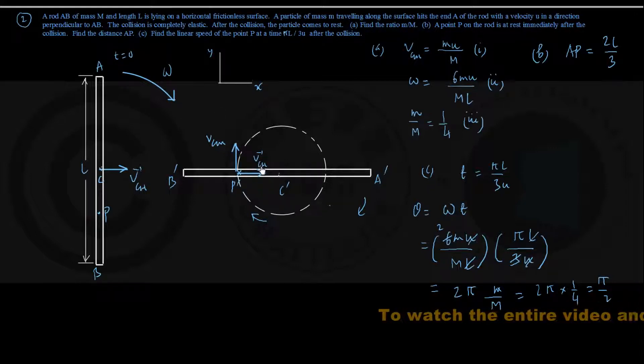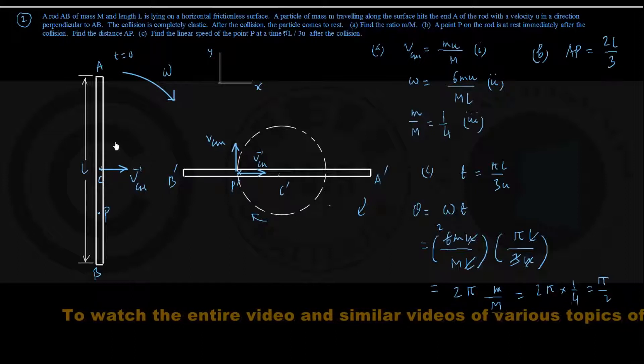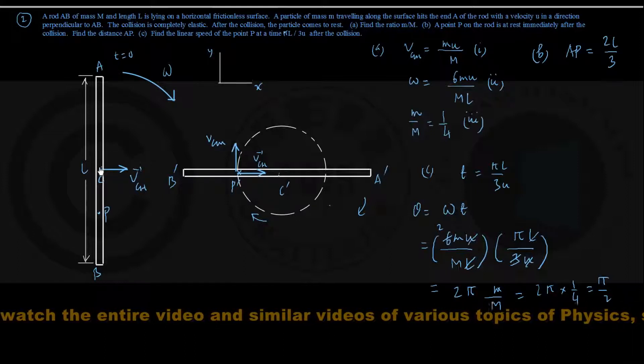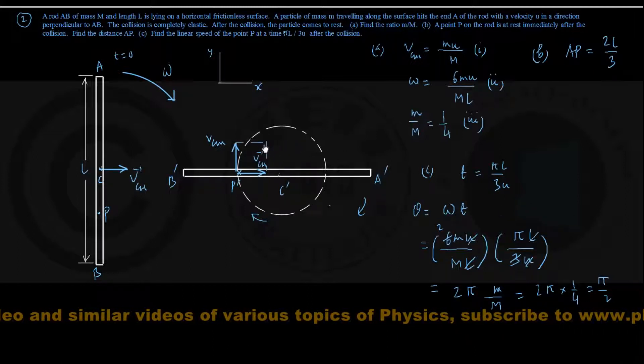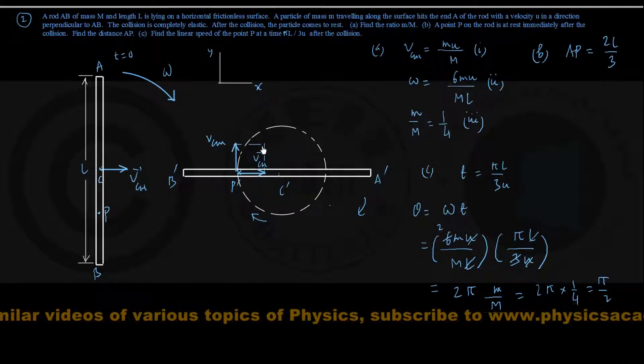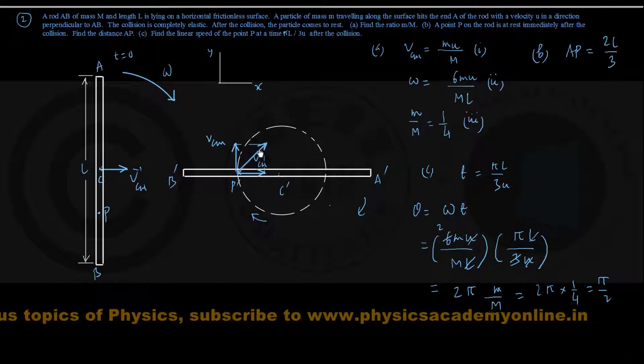This VCM is contributed because of translational motion of center of mass. This VCM is coming because of rotational motion of the rod about its center of mass. Therefore,